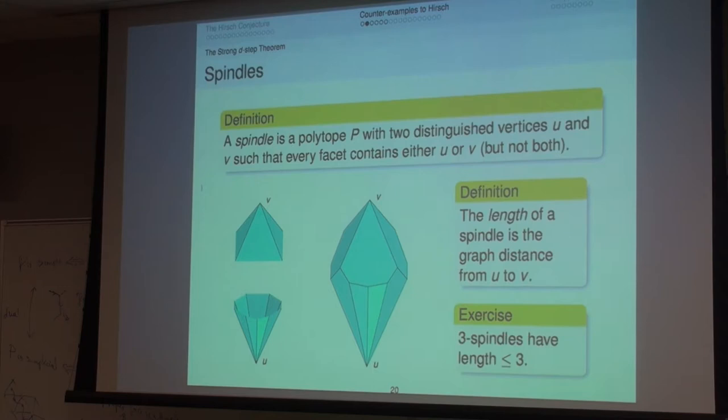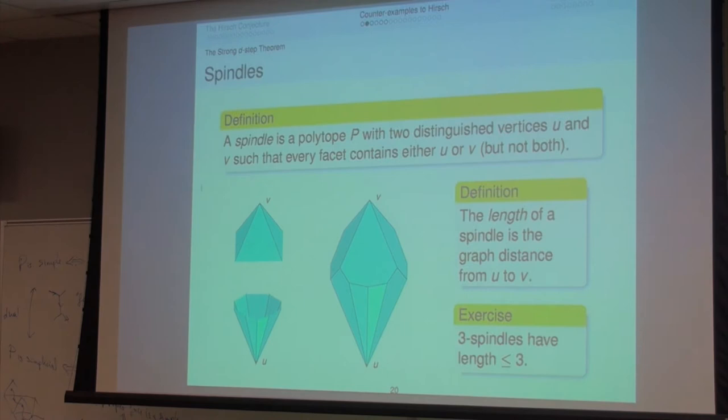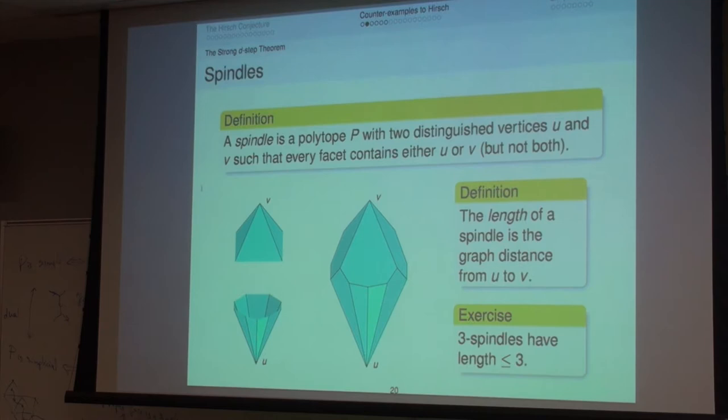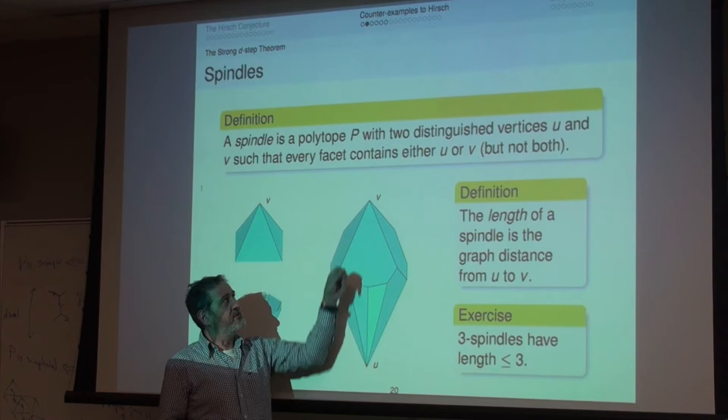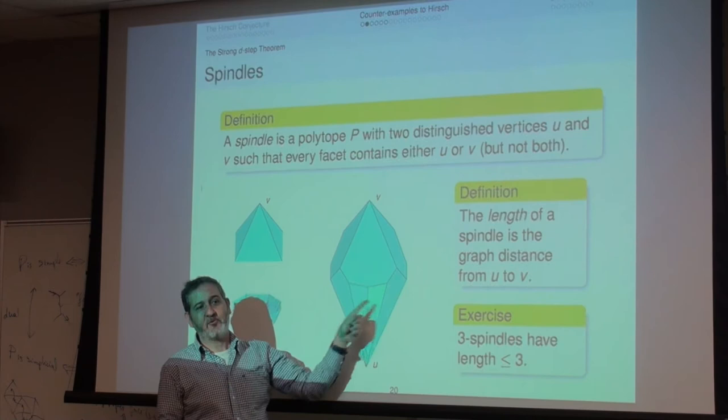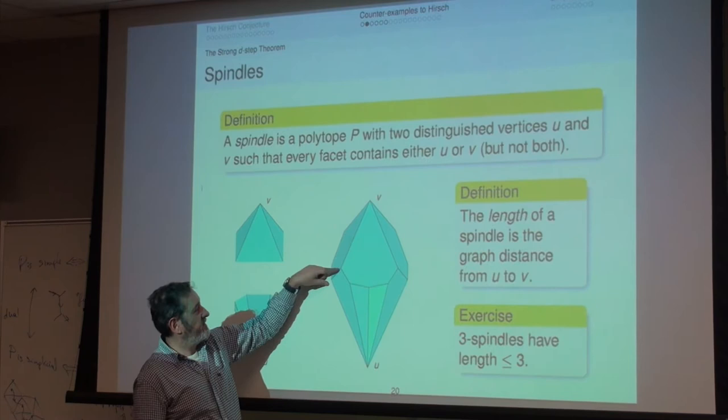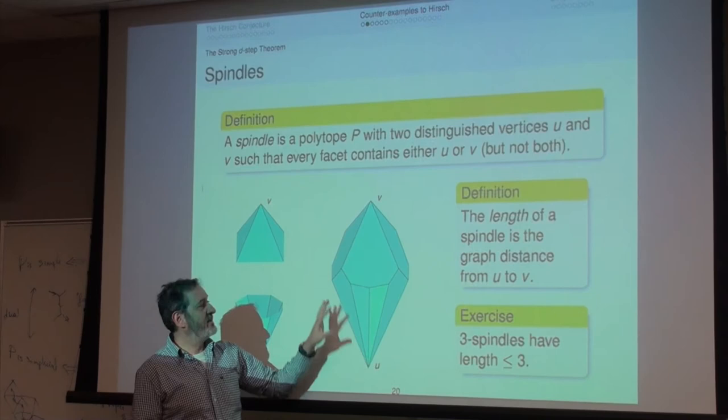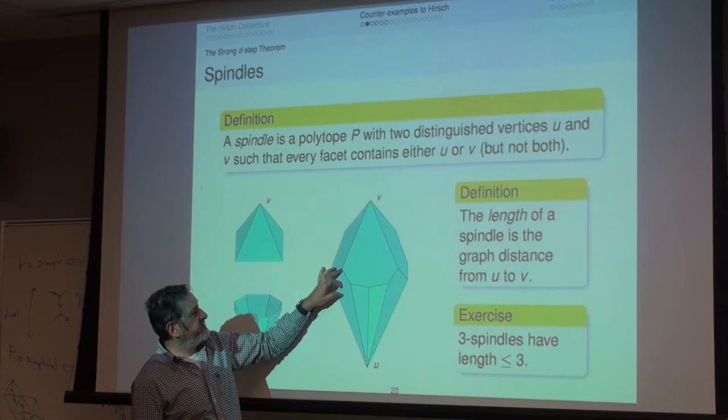Exercise: spindles of dimension 3 have length at most 3. Proof: looking at the graph of a spindle, there are edges from u, edges from v, and the rest form a cycle like an equator. Along this cycle there must be vertices that are neighbors of v and vertices that are neighbors of u, so there must be an edge connecting a neighbor of v to a neighbor of u. That proves the diameter is at most 3.